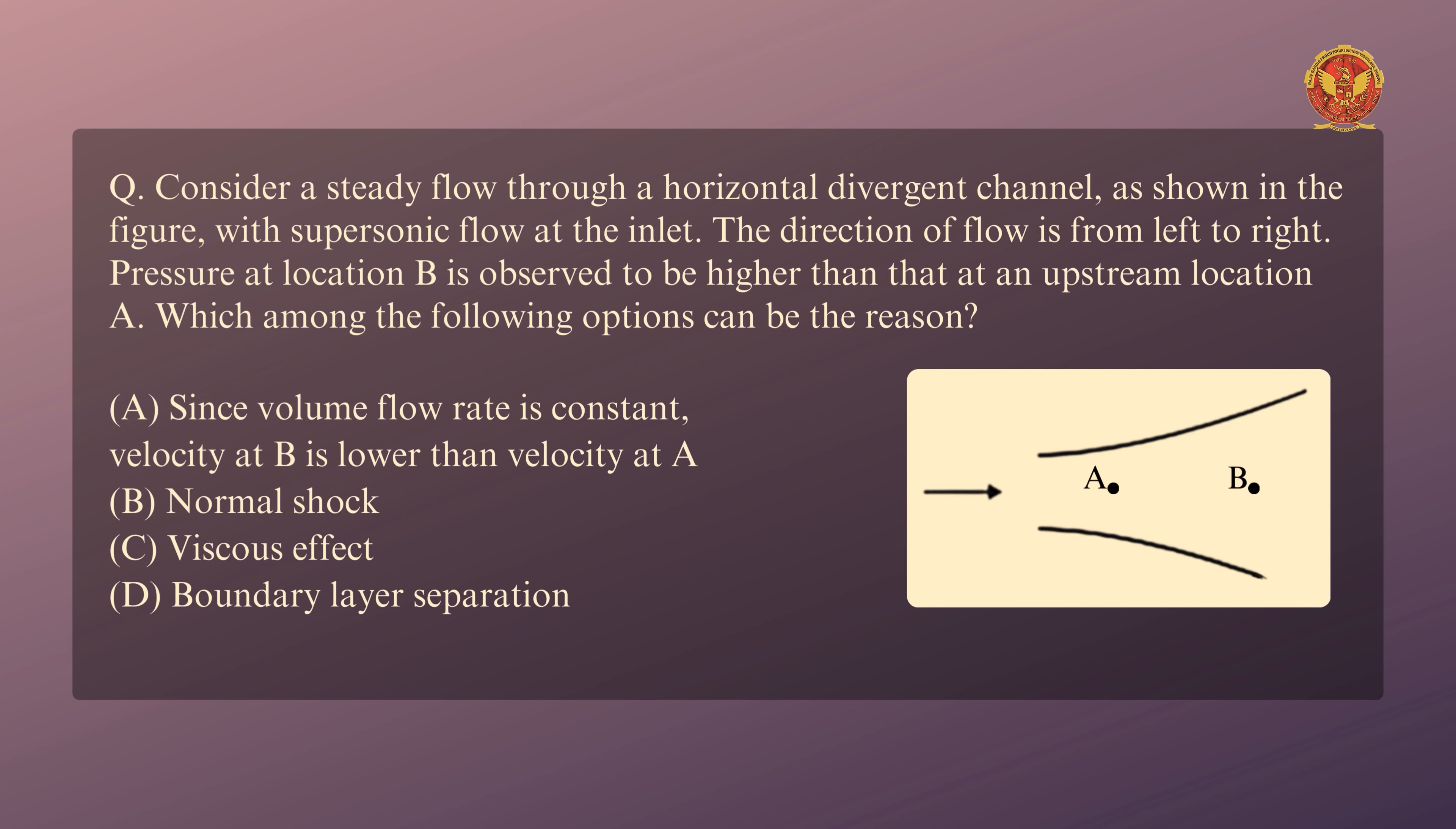To jo pehla vikalp hai usmein diya hai: Since volume flow rate is constant, velocity at B is lower than the velocity at A. Dusra vikalp diya hai normal shock ka, teesra vikalp diya hai viscous effect ka, chautha vikalp diya hai boundary layer separation ka.